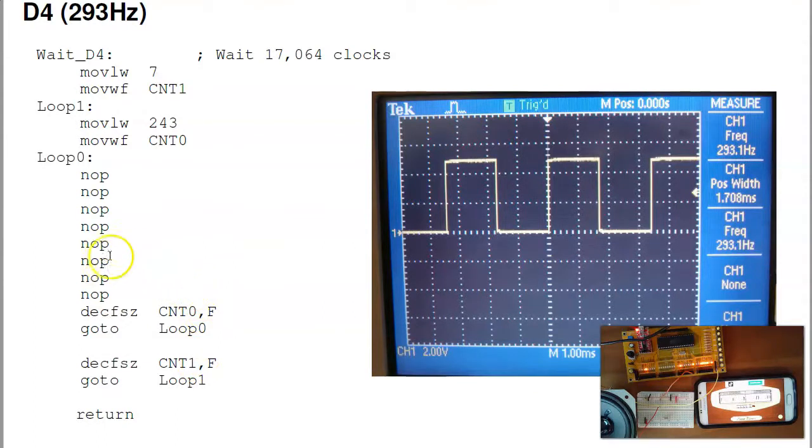And the way the wait routine works is similar to before. I've got these three loops. The inner loop is 11 clocks, times 243, times 7, plus 5 clocks, times 7, plus 5. If I add all that up, I should get to 17,000 clocks. If you check on the oscilloscope, I can see it's actually 293.1 hertz, 17,080 clocks.